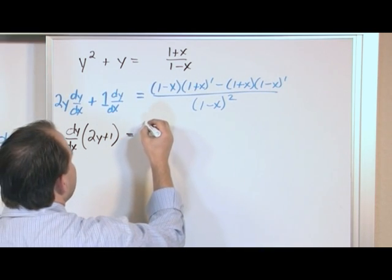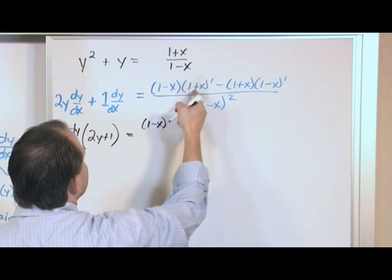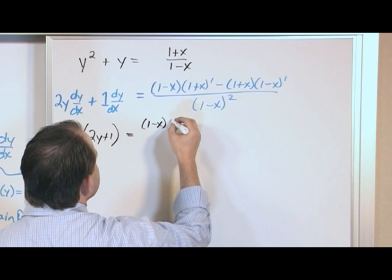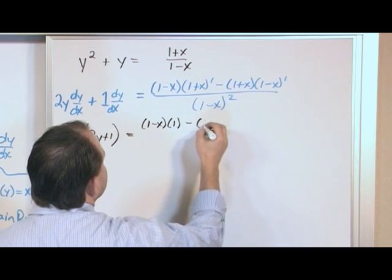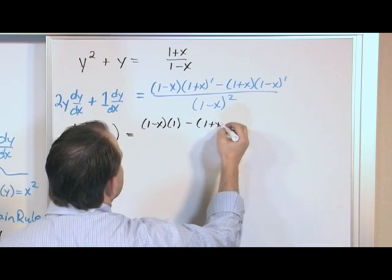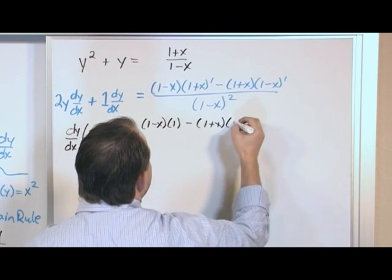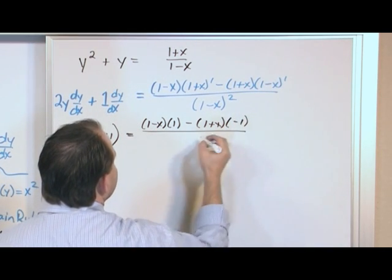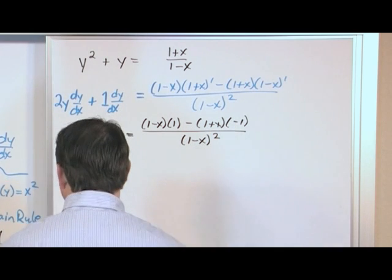And on the right-hand side, we'll have 1 minus x. The derivative of this guy is just going to be 1 minus 1 plus x. The derivative of this guy is negative 1. And on the bottom, we're just going to have 1 minus x squared.